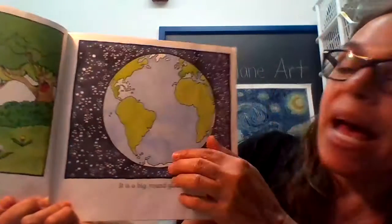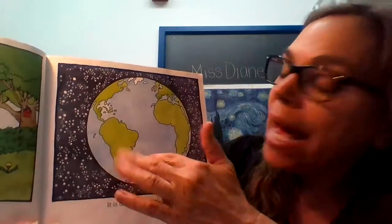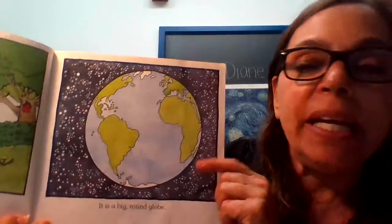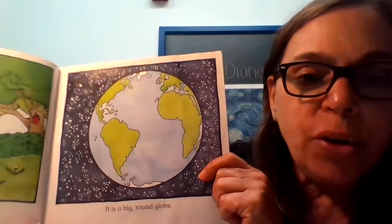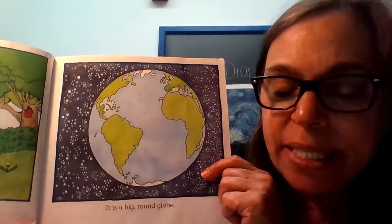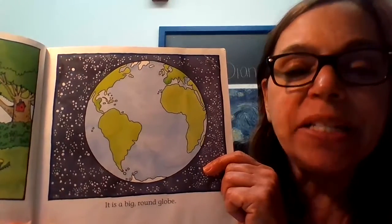The Earth has water, which is blue, and land, which is green, and sometimes brown if there's desert. Green means it's very grassy and has lots of trees. If the land is brown, that means it's a desert and it's very dry.